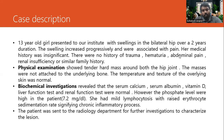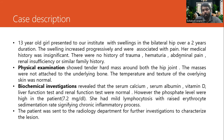We then subjected the patient to some biochemical investigations which revealed that the serum calcium, serum albumin, vitamin D, liver function tests, and renal function tests were in fact normal. However, the phosphate levels were high in the patient — approximately around 7.2 mg per deciliter. She had mild lymphocytosis with raised erythrocyte sedimentation rate, which signified that the patient was suffering from a chronic inflammatory process.